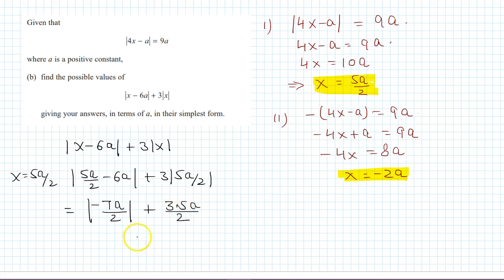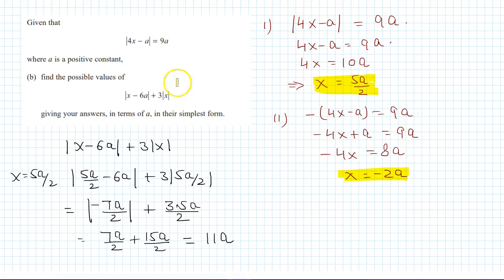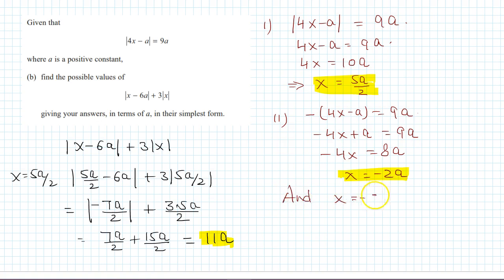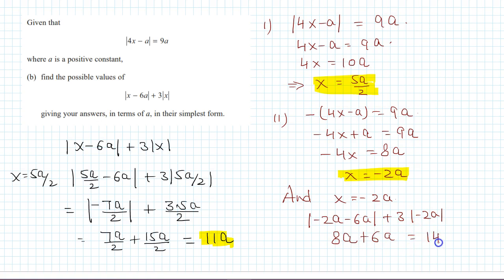That gives 7a/2 + 15a/2 = 22a/2 = 11a. So the first value is 11a. For x = -2a: |-2a - 6a| + 3·(-2a) = |-8a| - 6a = 8a - 6a... actually 3×2a = 6a so 8a + 6a = 14a. So the second value is 14a. The two possible values are 11a and 14a.